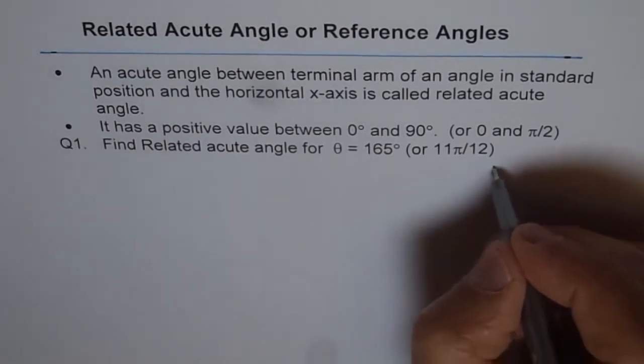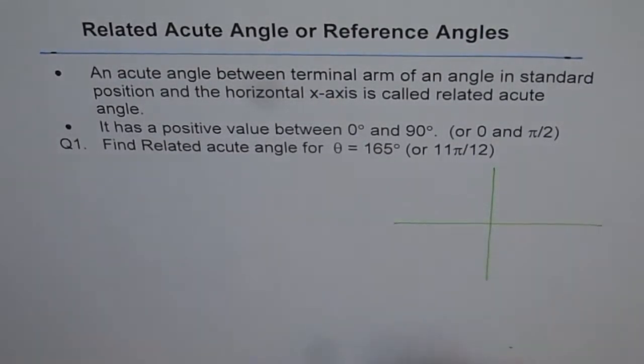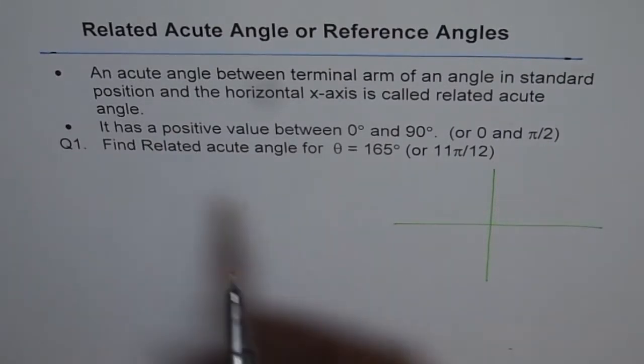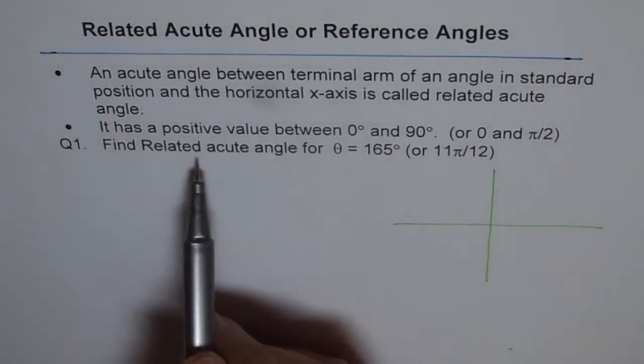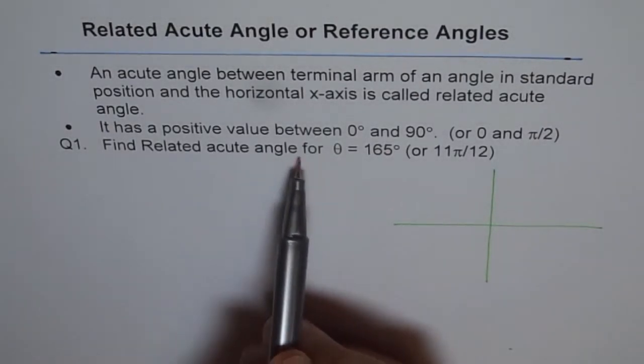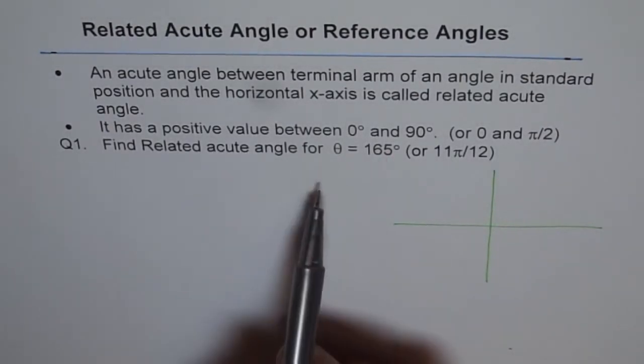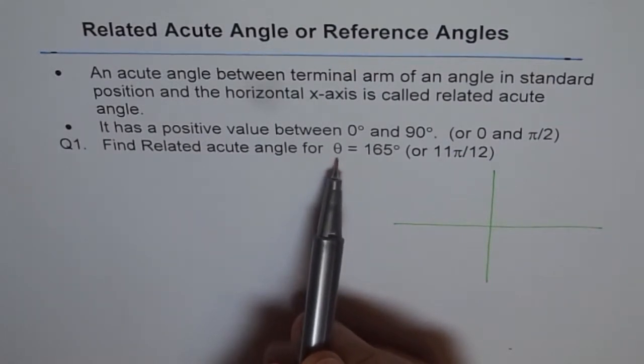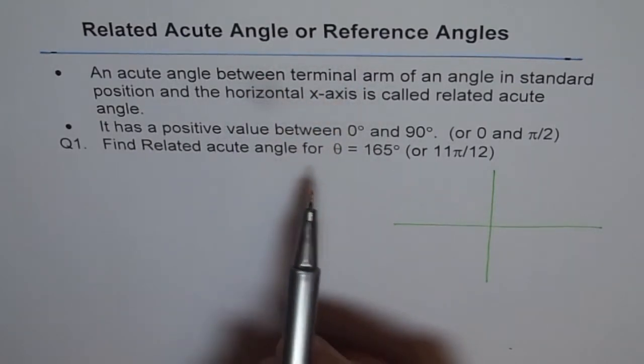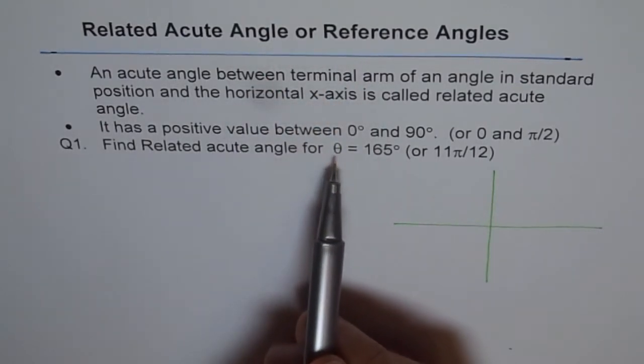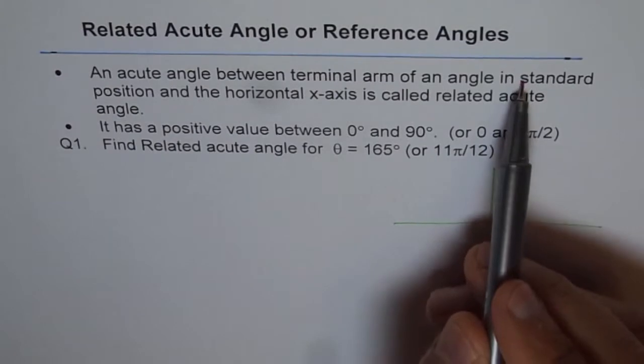So let's look into this angle. Let's place it on the coordinate plane. When we say find the related acute angle for θ = 165, then θ is our principal angle. And to find related acute angle, we have to always sketch this principal angle in standard position.